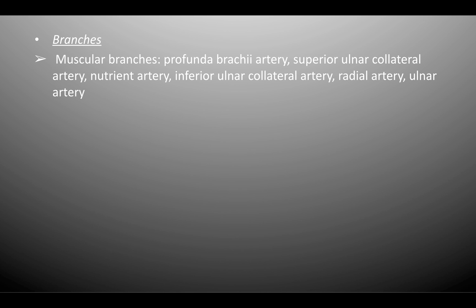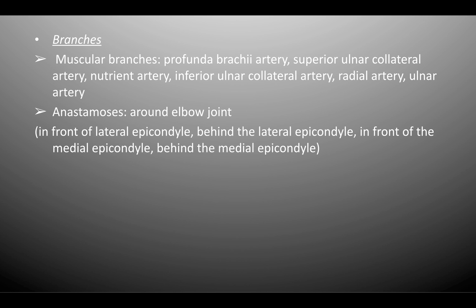The branches of the brachial artery are the muscular branches, namely the profunda brachii artery, the superior ulnar collateral artery, a nutrient artery, and the inferior ulnar collateral artery, and the radial and the ulnar arteries. There are also several anastomoses around the elbow joint: one in front of the lateral epicondyle, one behind the lateral epicondyle, and others in front and behind the medial epicondyle.